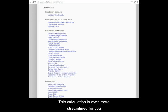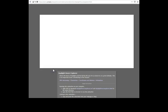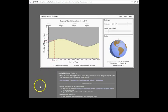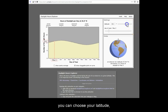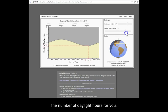This calculation is even more streamlined for you with the daylight hours explorer. Over here, you can choose your latitude and date of the year and it will automatically calculate the number of daylight hours for you.